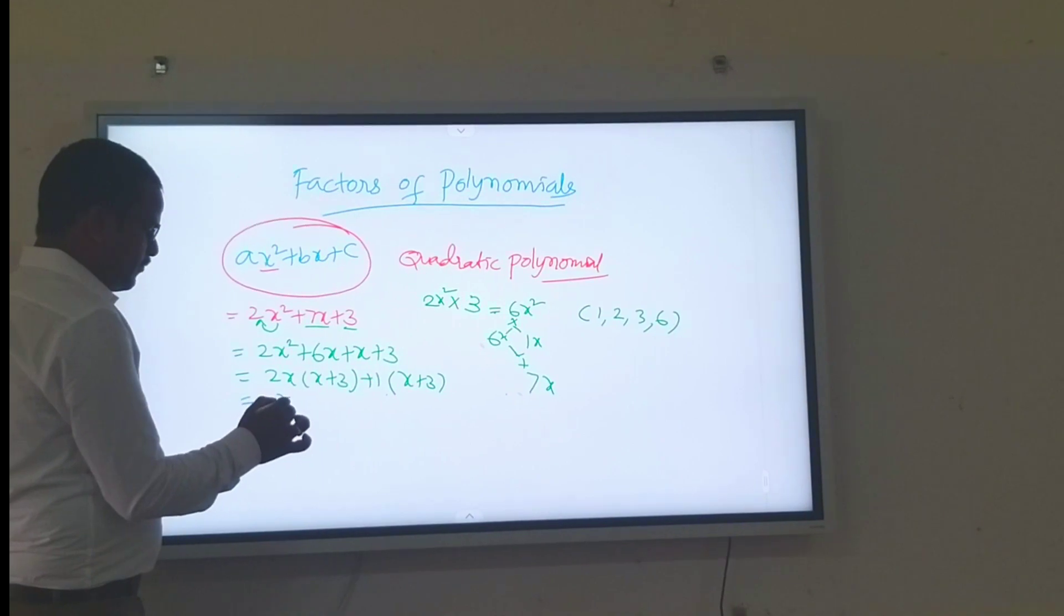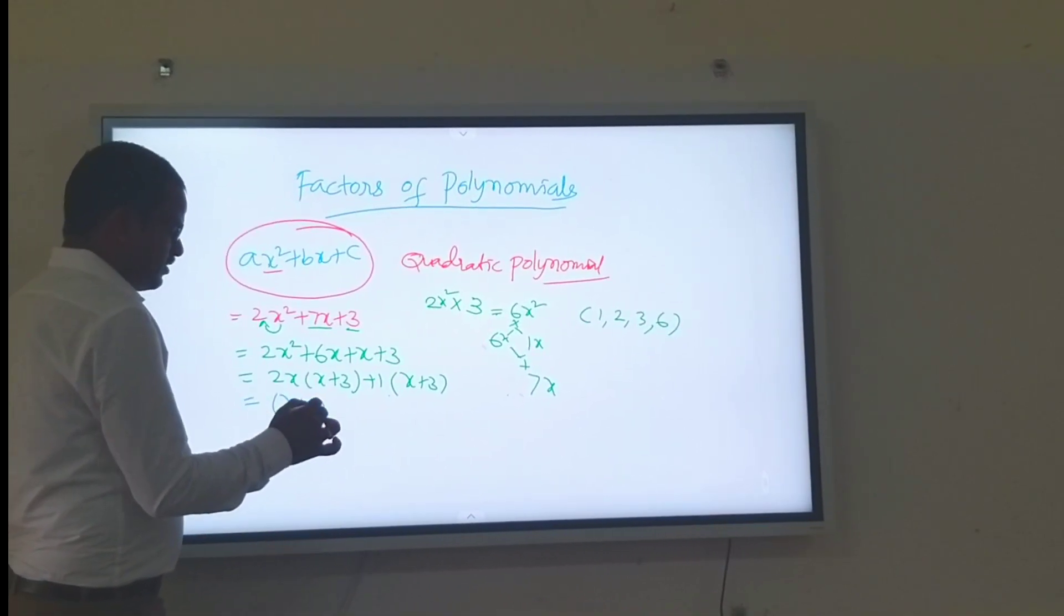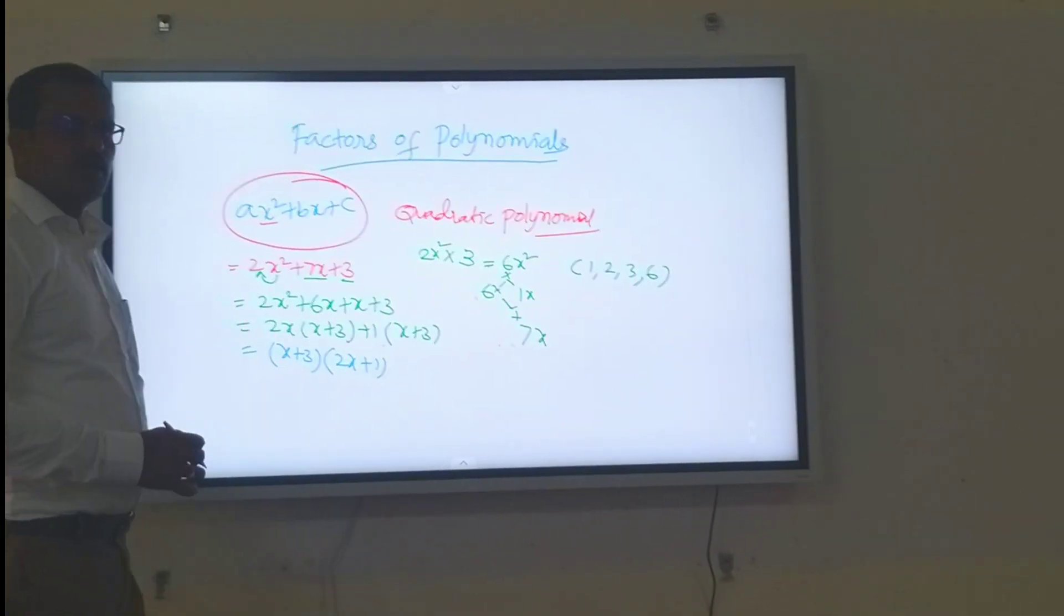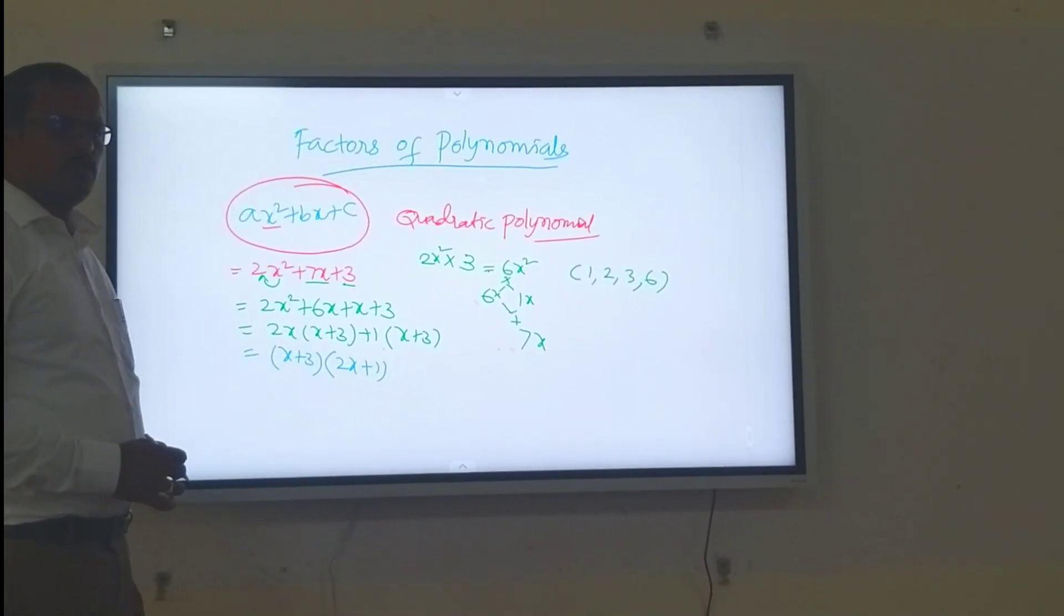Keep x plus 3 as a common. Then you got x plus 3 into 2x plus 1 are the factors.